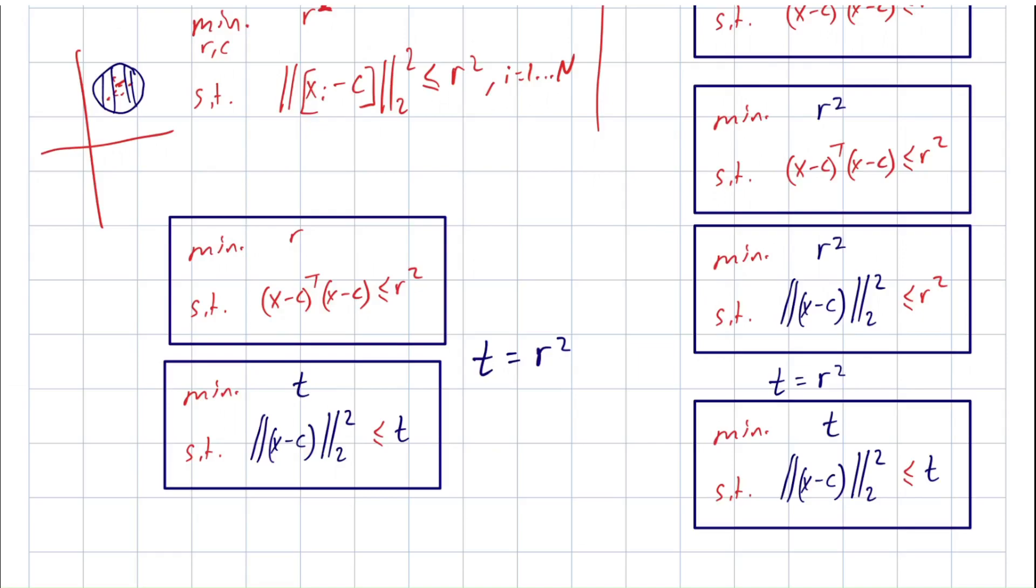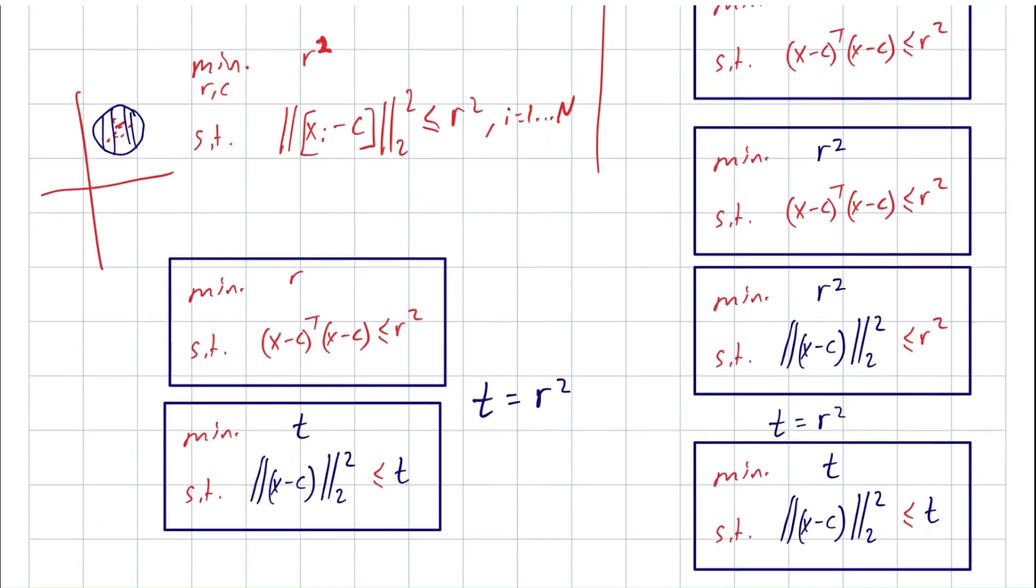If we look at this page, this part of the screen, this is the original problem. By using this change of variable we transform that problem and obtain an equivalent representation. This is convex, we can solve it easily.